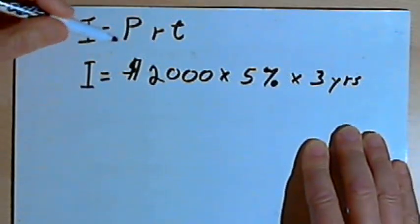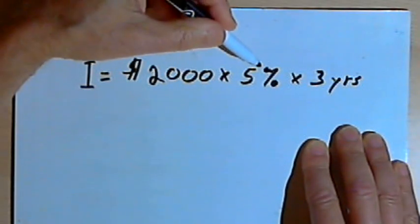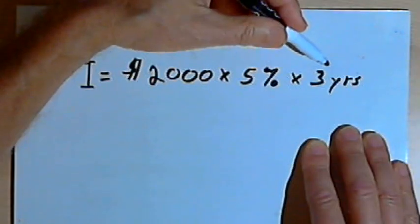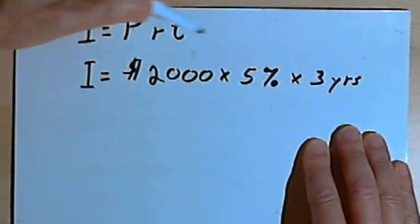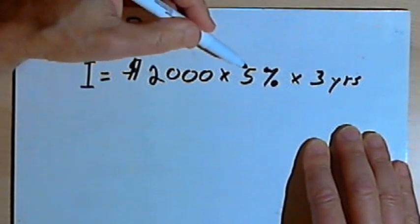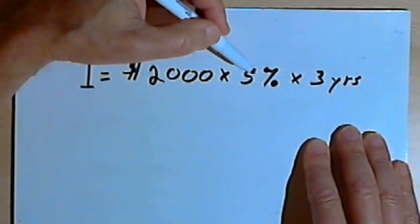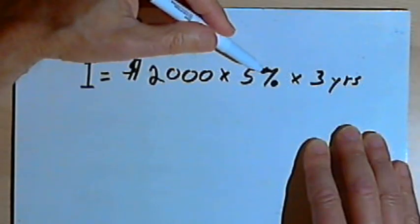So the interest is going to equal $2,000 times 5 percent times 3 years. Now I can clean this up a little bit. I don't need the dollar sign for the 2,000 and I don't have to write years. I am going to have to convert the 5 percent into a decimal.